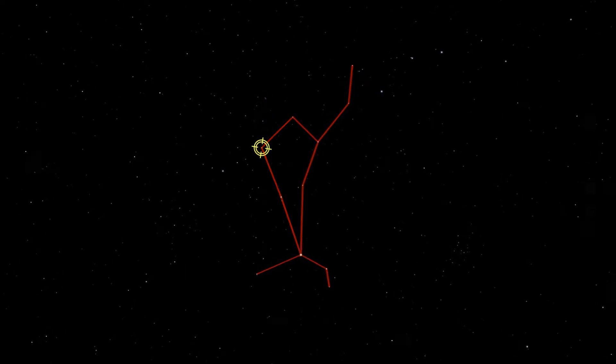The first stop on our journey is the star Princeps, located at the right shoulder of Boötes, or his left from our perspective. To our eyes, it looks like one star, but using a telescope, you'll find two stars close together.